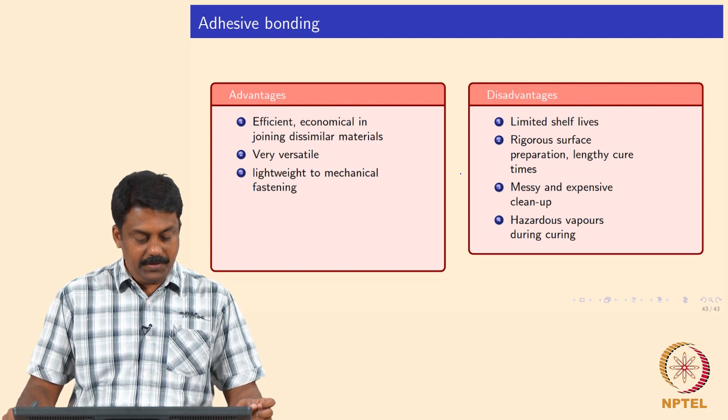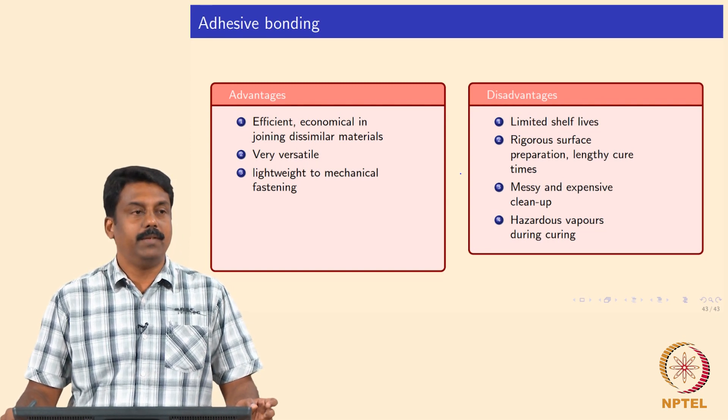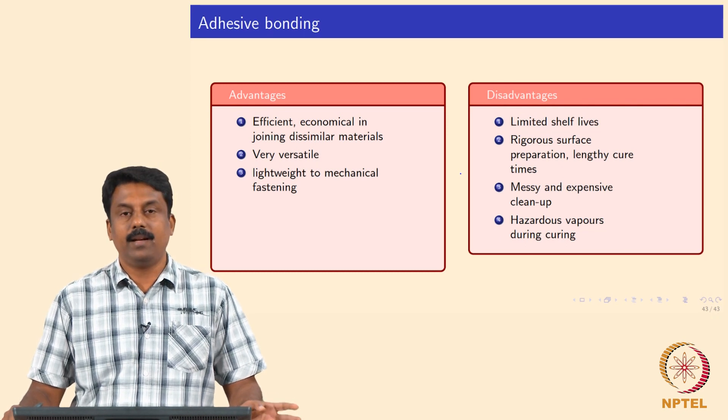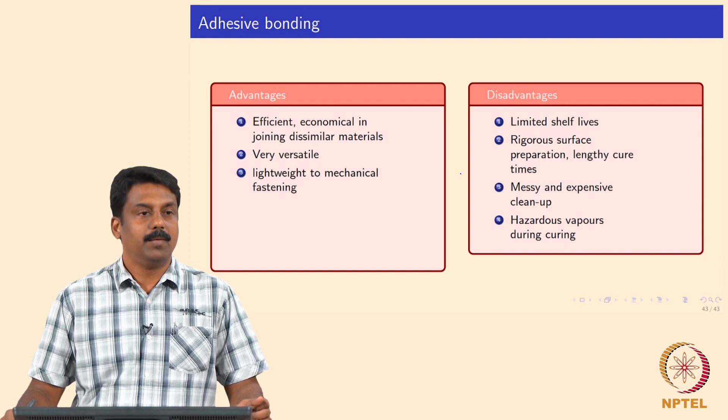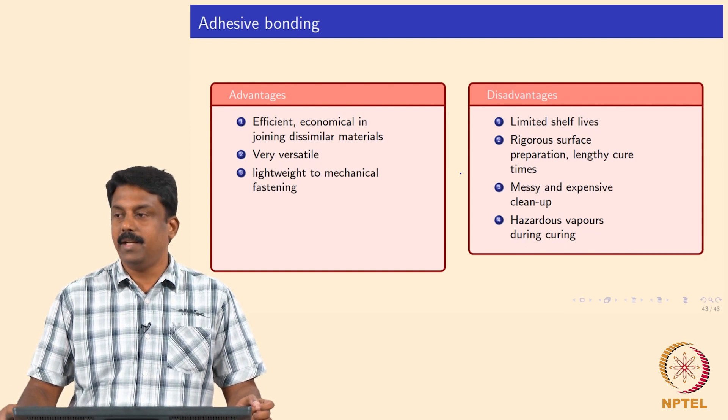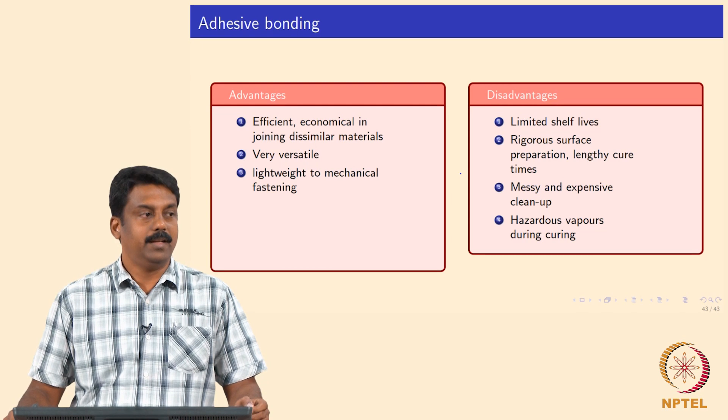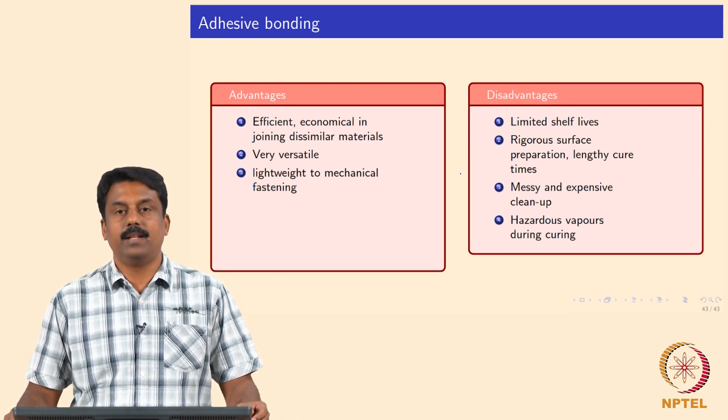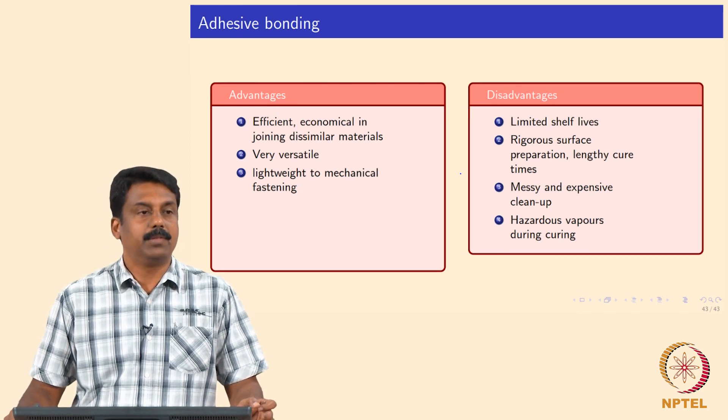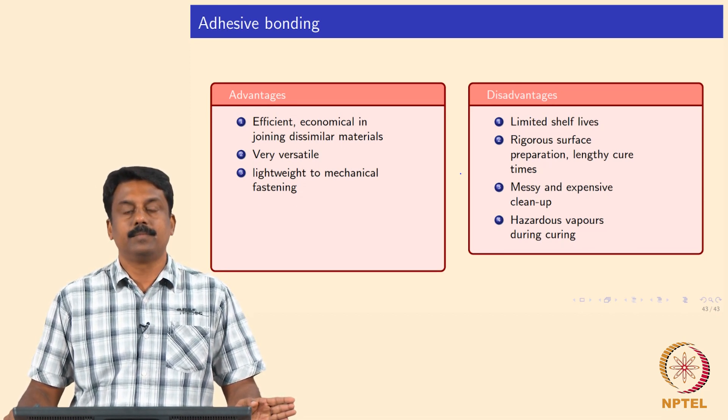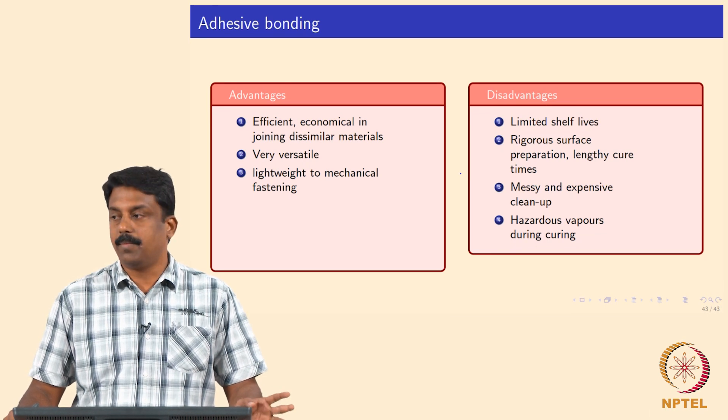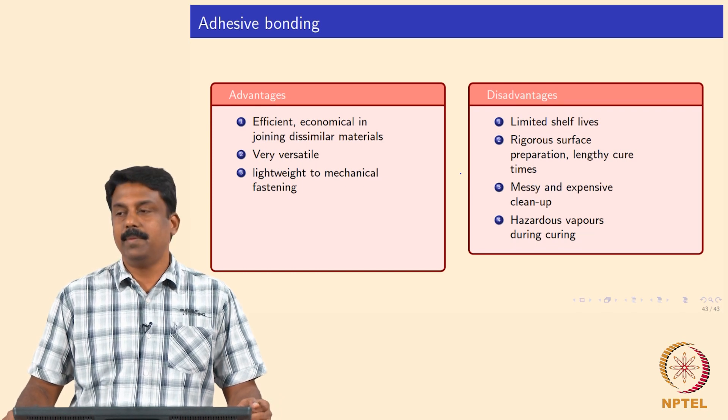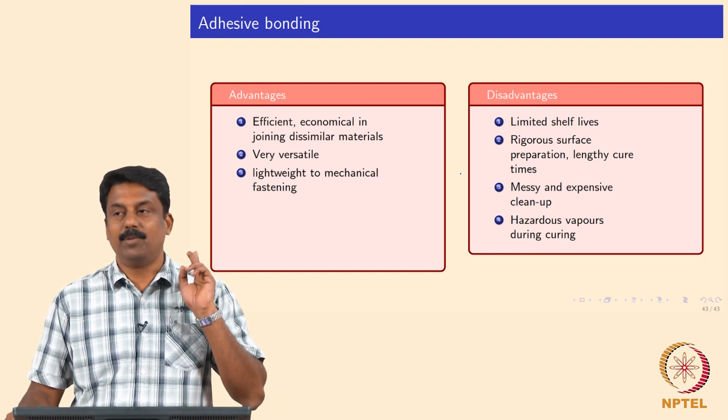The advantage is efficient and economical in joining dissimilar materials. It's very versatile and lighter than mechanical fastening. But the disadvantage is the joint degrades over time because the polymer degrades much faster than metals and alloys. The surface preparation is extremely important. If the surface preparation is not done properly, you are not going to get good welds. It is extremely messy.